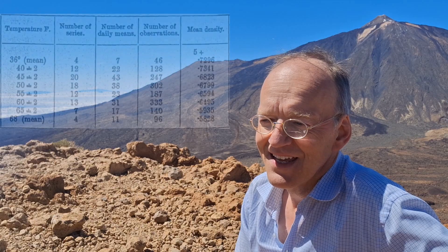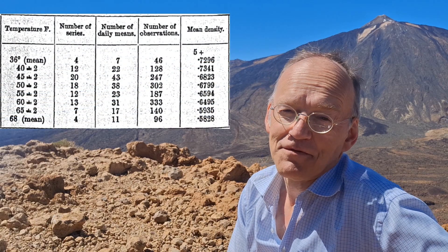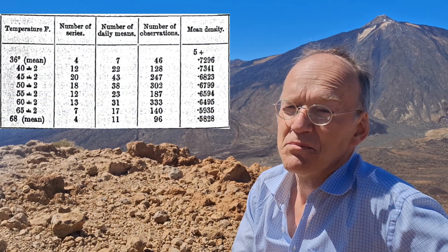Isaac Newton, after whom the constant is named, didn't believe that the gravitational constant could ever be measured. It took something like a century until a very ingenious guy, John Michell, invented the principle that was then realized by Cavendish and published in 1798 under the funny title 'A Measurement of the Mean Density of the Earth.' But it was actually a measurement of the gravitational constant.